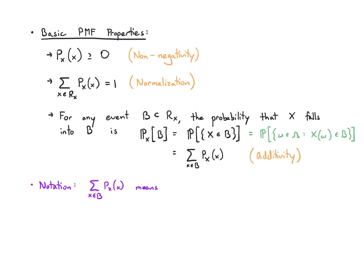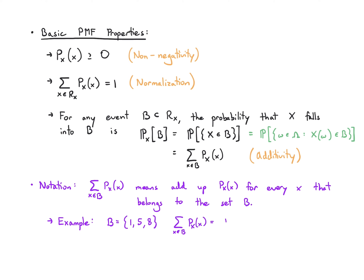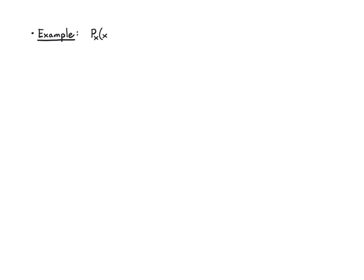To clarify the summation notation: when I write the sum over x in B of the PMF, I mean add up the PMF for every x that belongs to the set B. For example, if B is the set {1, 5, 8}, that means add up the PMF value at 1, the PMF at 5, and the PMF at 8. This notation with x belonging to B underneath the summation just means add up the values where x actually falls into B. We'll now wrap this up with a longer example.